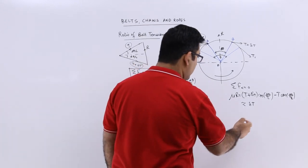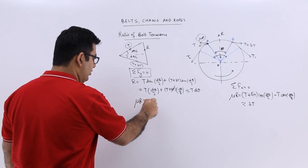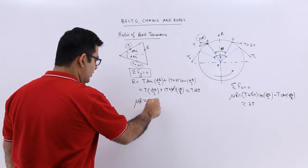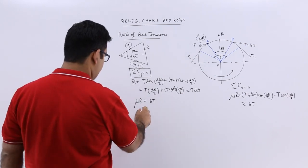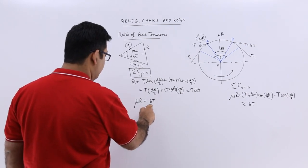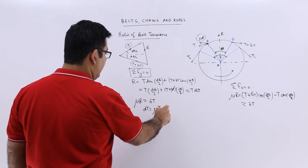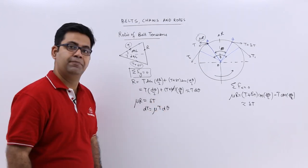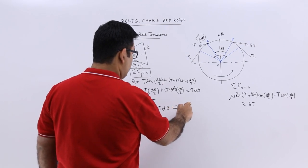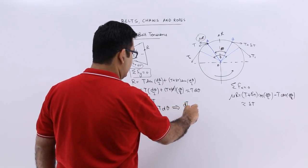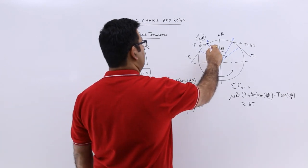So μR = δT, and since R = T·dθ, substituting gives δT = μ·T·dθ, which gives dT/T = μ·dθ. This relation applies for this small sector.